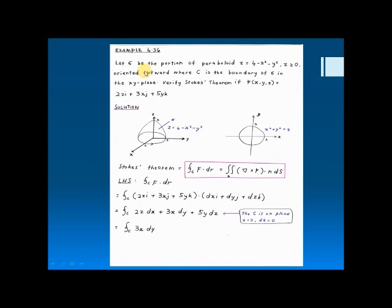Do you know that? First, we explain an example of Stokes' theorem. The example is: let Sigma be the surface where F·dr equals F·dr minus F·dr, which is equal to 0.